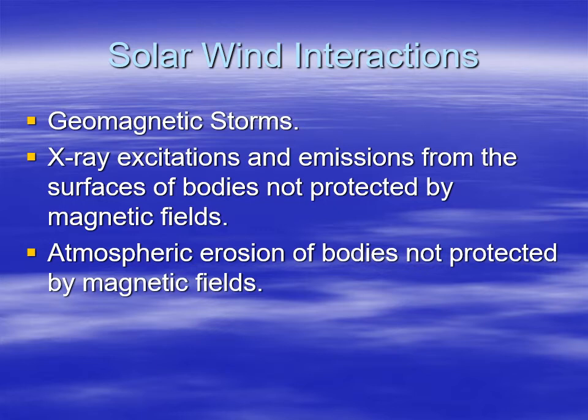The solar wind can also cause X-ray excitations from things not protected by magnetic fields. Some of the asteroids and comets — all that solar wind interaction and solar radiation actually causes gases in their vicinity to be excited and give off X-rays. We talked about how when you look at comets, there's a big cloud of X-rays surrounding them from the hydrogen gas being excited by the sun. The solar wind can also erode the atmospheres of things. Mars' atmosphere is probably thinner than it needs to be, even accounting for gravitational loss, simply because the solar wind is ablating and damaging it.